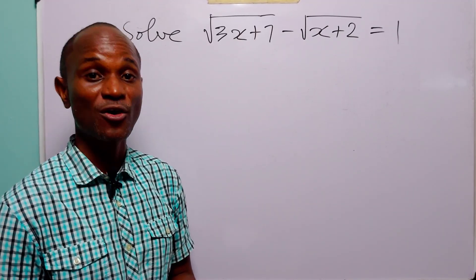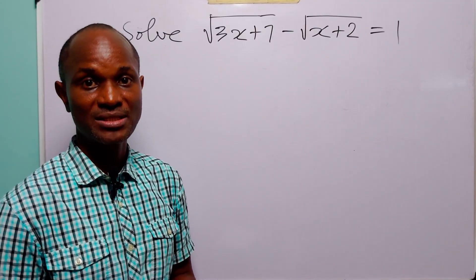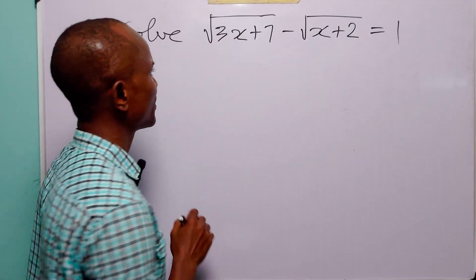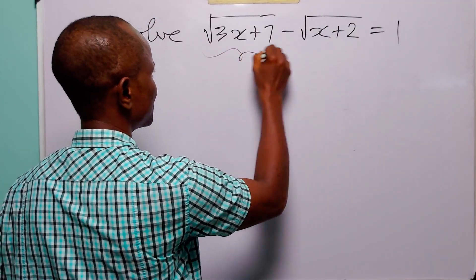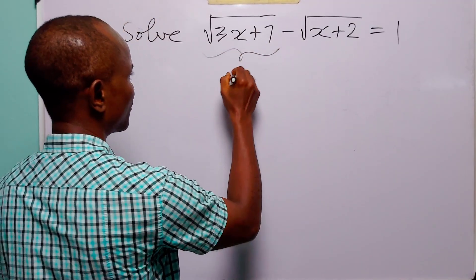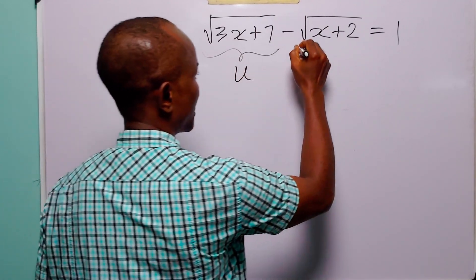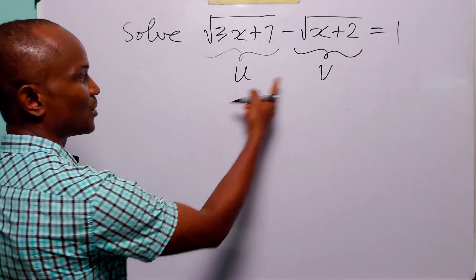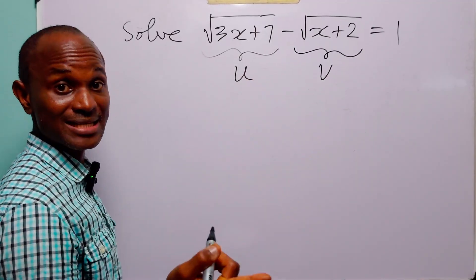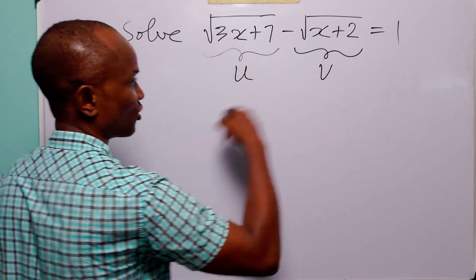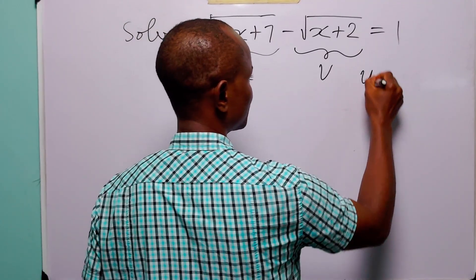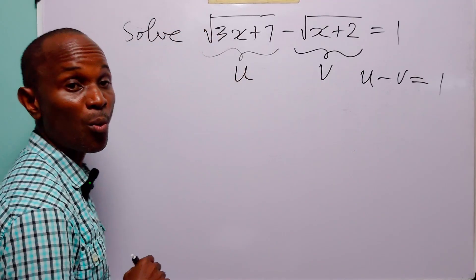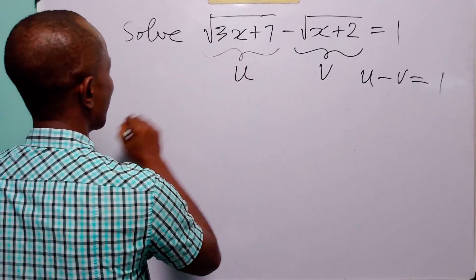This alternative method involves substitution. We are going to let the first radical be equal to u and the second radical be equal to v. With these two substitutions, you can easily see that the original equation becomes u minus v is equal to one.